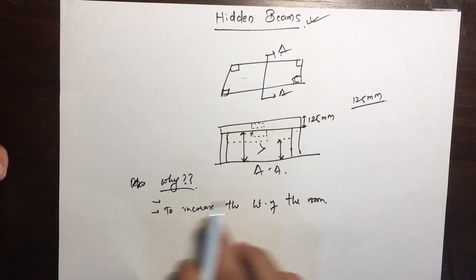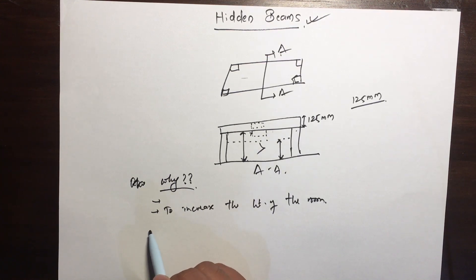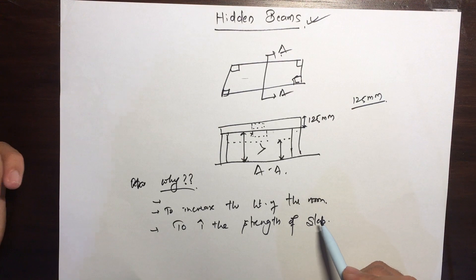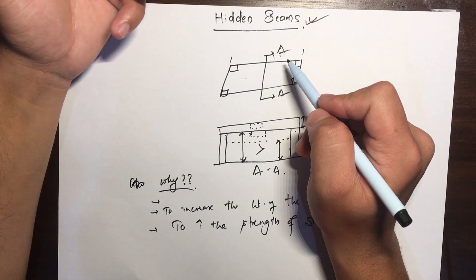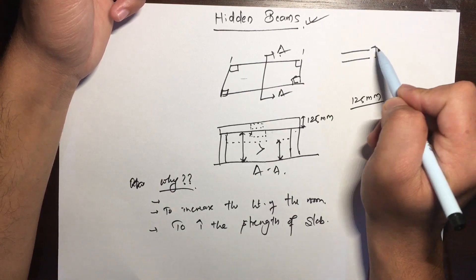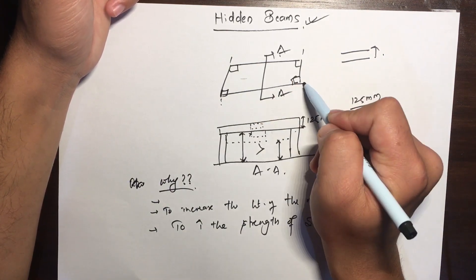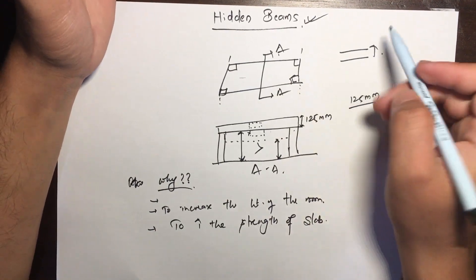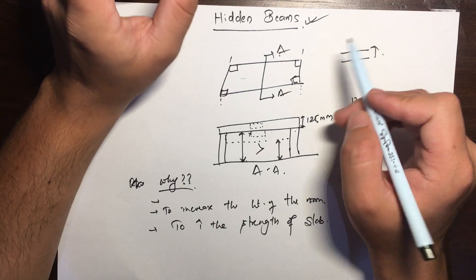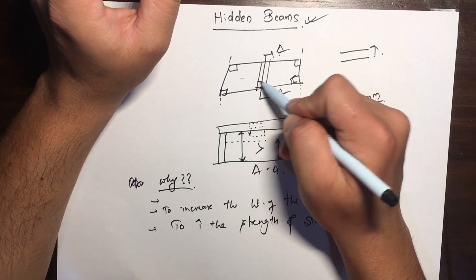Another purpose of a hidden beam is to increase the strength of the slab. Sometimes, due to the large span of the slab, the thickness requirement is higher. If you increase the thickness of the slab, then the cost of construction will increase. So in order to limit the thickness of the slab, you provide a beam here and...